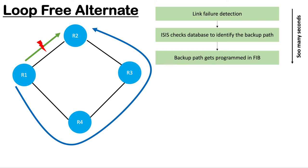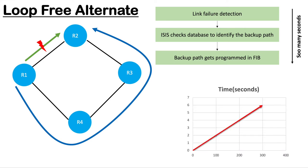If we don't have any protocol like Loop-Free Alternate, this can take many seconds, and during those seconds we are going to have a big amount of packet loss. The rate of traffic through routers is increasing every day, and the more time a router takes to converge to the backup path, the more packet loss will be seen. This convergence time is directly proportional to the number of routes in the routing table. For example, if a router has one million routes, it may take around 45 to 50 seconds to converge.